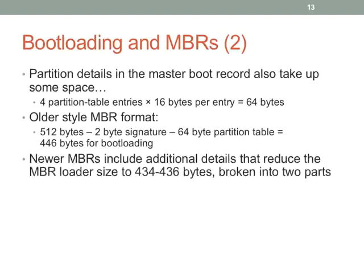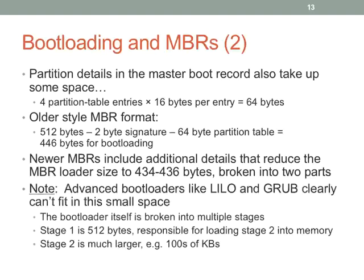Newer master boot records contain even more information, shrinking the available space to 434 to 436 bytes depending on the MBR format, and it's broken into two parts requiring a jump between them. You can already see that a sophisticated bootloader — like GRUB, which is hundreds of kilobytes — could never possibly fit into 434 bytes.